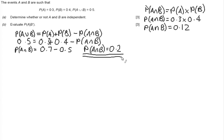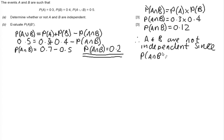Therefore, A and B are not independent, since probability of A intersect B is not equal to the probability of A times the probability of B.